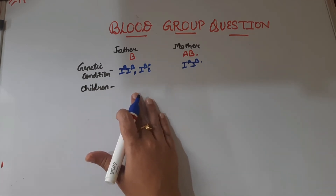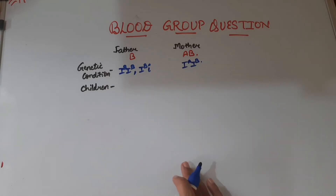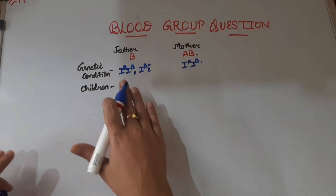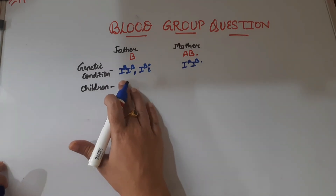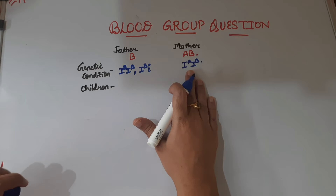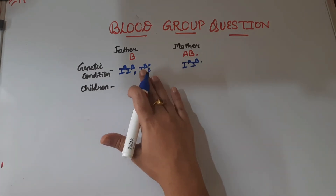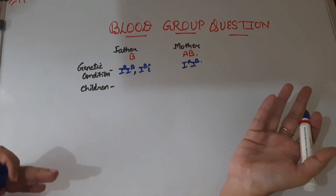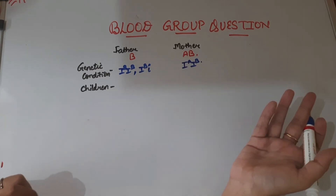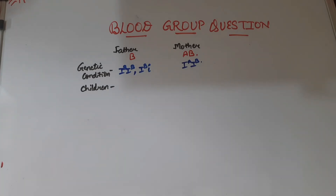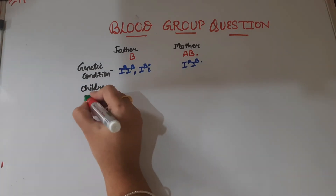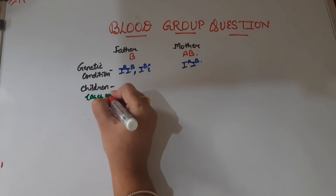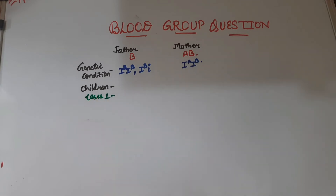Whenever we talk about possibilities in the case of children, we have to solve such questions on the basis of cases: what possibilities we get if one condition in the father fuses with the mother's condition, and what possibilities we get with the other condition. On that basis, we are going to solve these questions case by case. Let us take Case 1.